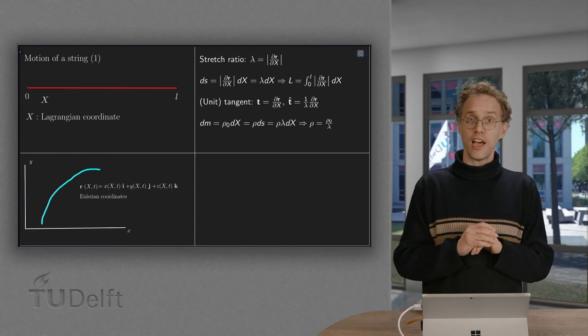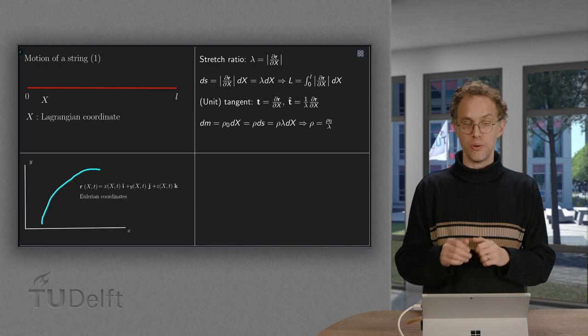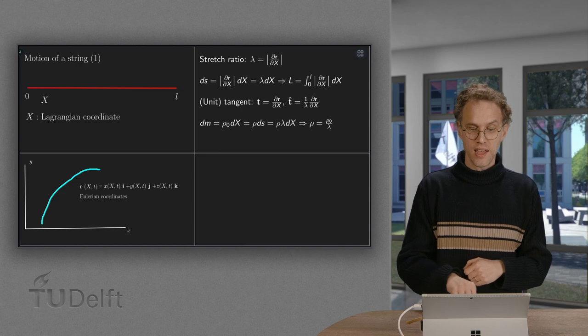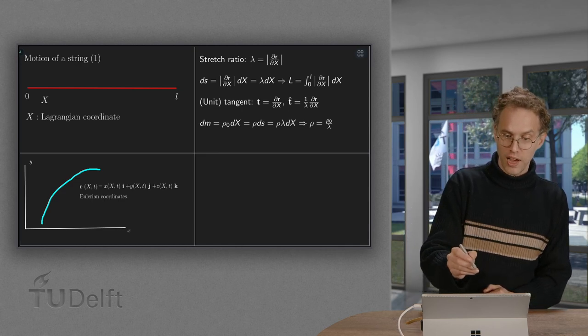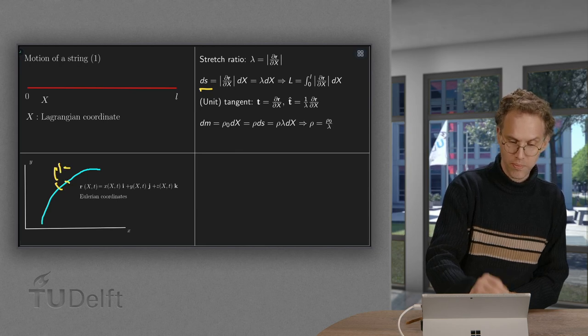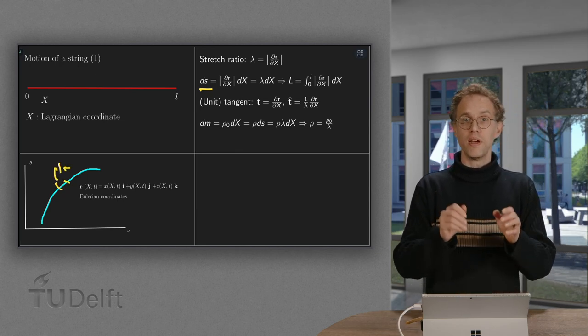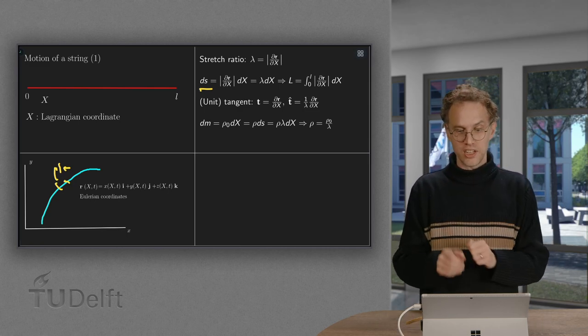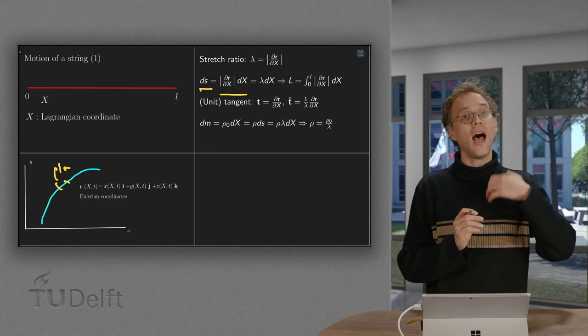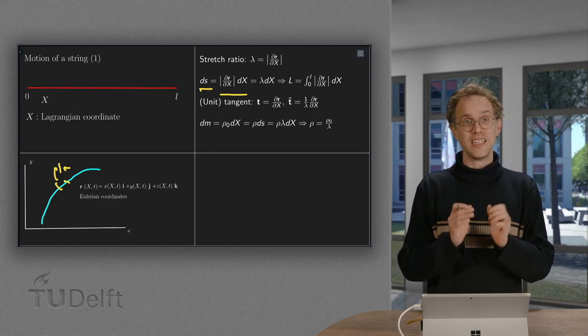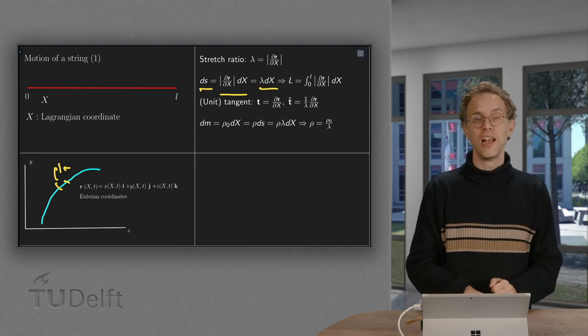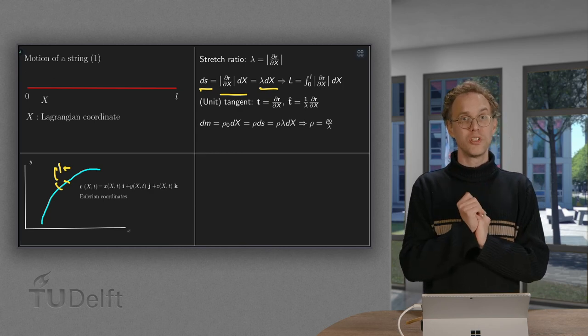A more important aspect of the string is the so-called stress ratio, which is the norm of dr/dx. So what does that mean? If you have a small element in space, ds, you can compute it by taking dr/dx times dx. This always holds. And since we have defined the norm of dr/dx as our lambda, we know that ds equals lambda times dx.